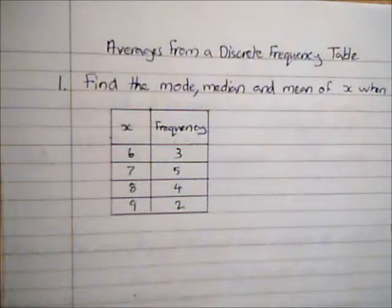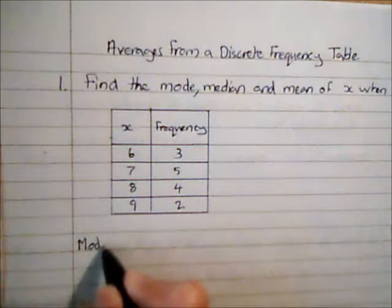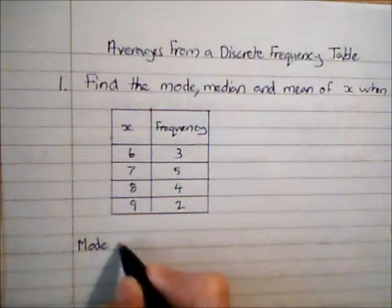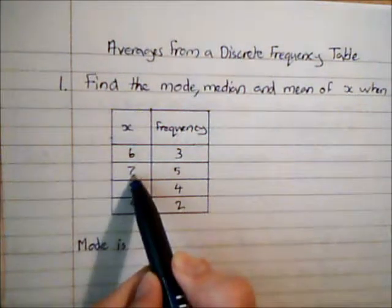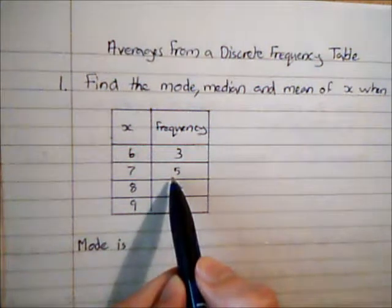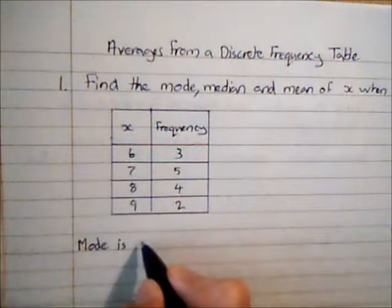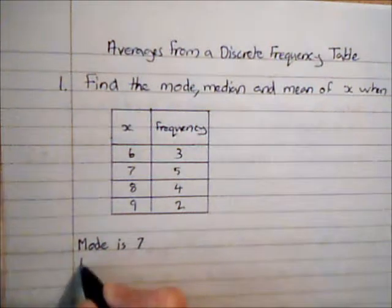The easiest is the mode. The mode is the most common piece of data. If we look at the table here we can see that seven is the most frequently occurring number because it occurs five times, so the mode is seven.